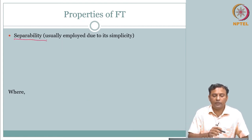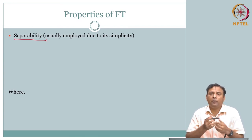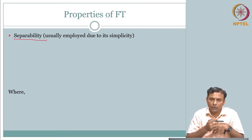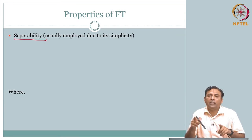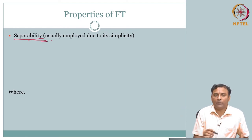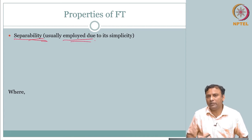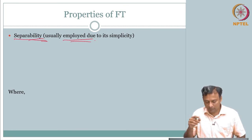Another useful property is separability. If F(u, v) is the 2D Fourier transform of f(x, y), instead of doing the full two-dimensional Fourier transform, you can do two one-dimensional Fourier transforms: first take the Fourier transform along the x direction, then cascade it with a Fourier transform along the y direction. You can separate the two-dimensional Fourier transform into two one-dimensional Fourier transforms, which simplifies computation.